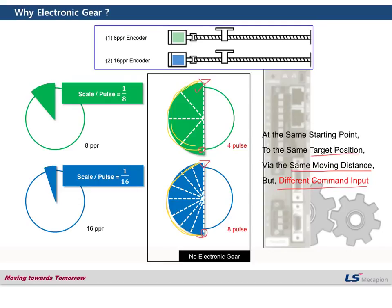For the 8 PPR encoder axis, it needs just 4 pulses to reach the target position. But for the 16 PPR encoder axis, it needs 8 pulses to reach the same target position. So the first encoder needs 4 pulses while the second needs 8 pulses for the same moving distance.